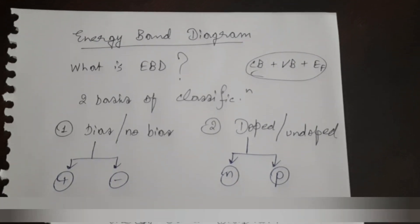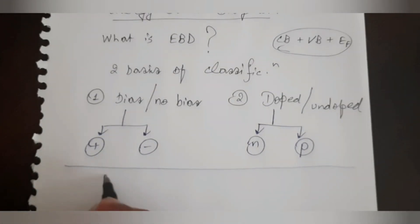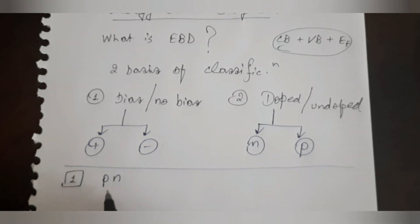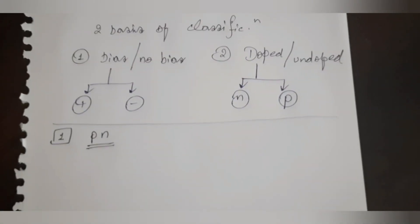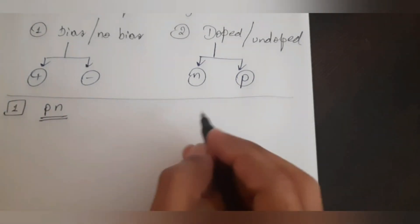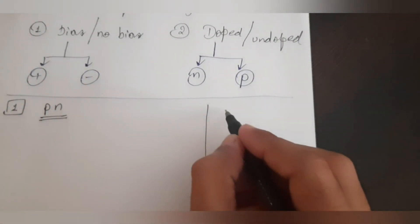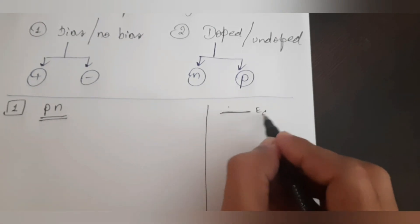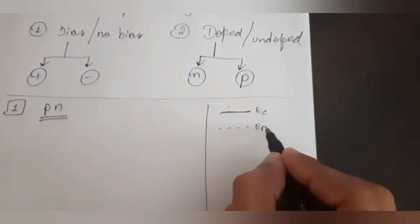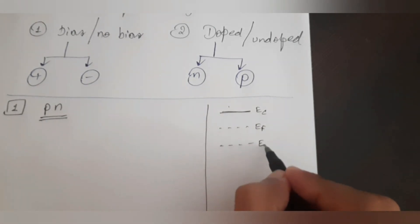We shall begin with the PN junction energy band diagram, so that I can explain the same for the NPN and PNP bipolar junction transistors using the PN junction diode as a reference.